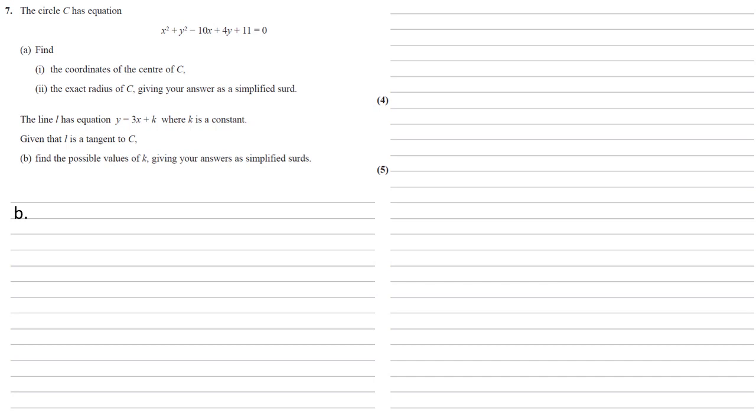We know that the line and the circle are meeting, so let's substitute our equation for L into the y in the equation for the circle. We've got x squared plus 3x plus k all squared minus 10x plus 4 lots of 3x plus k plus 11 equals 0.